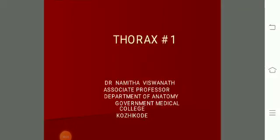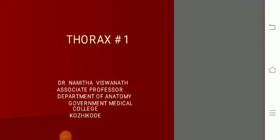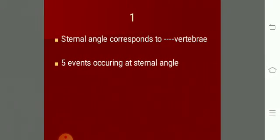Today we will go through a few MCQs on thoracic wall. First one: the sternal angle corresponds to which vertebrae? It is the lower border of T4 vertebrae. And name 5 events that occur at the sternal angle.